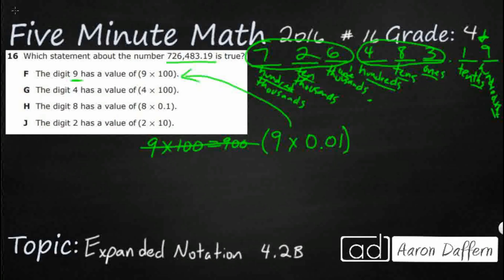So this one is definitely incorrect. G: the digit 4 has the value of 4 × 100. So here's my 4 right there, and I've got 4 × 100—that makes 400. And yeah, it looks like my 4 is actually in my hundreds spot, so this is looking good, which means we need to show that the other two are incorrect.